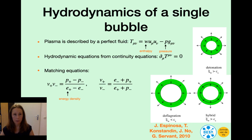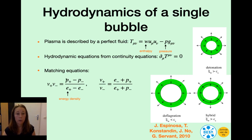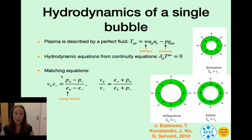So let's have a look at these hydrodynamic equations. The plasma is described by a perfect fluid. This is the energy-momentum tensor of the perfect fluid in terms of the enthalpy w, the four-momentum u, the pressure p, and the metric g. The hydrodynamic equations simply follow from the continuity equations. And then by integrating over a small area around the bubble wall, one gets a set of matching equations. v plus and v minus are the fluid velocity right in front of and right behind the bubble wall, and the matching equations are given in terms of the pressure and the energy density in front of and behind the bubble wall.